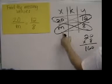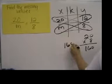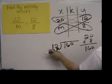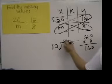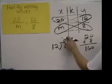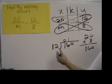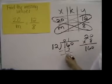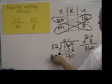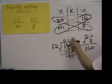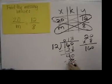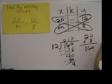We can figure out what this missing value is by taking 160 and dividing by 12. Well, 12 doesn't go into 1. 12 goes into 16 one time with 4 left over. We drop the 0. 12 goes into 40 three times — that's 36 with 4 left over.